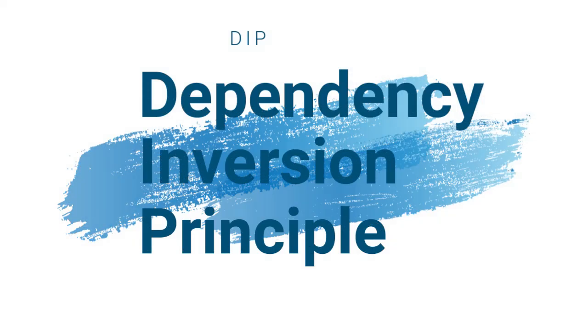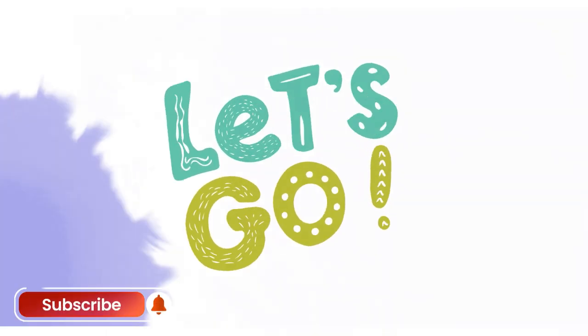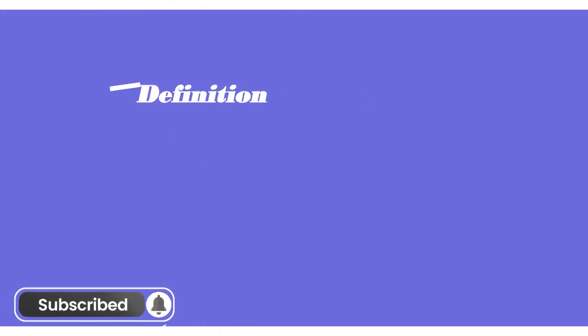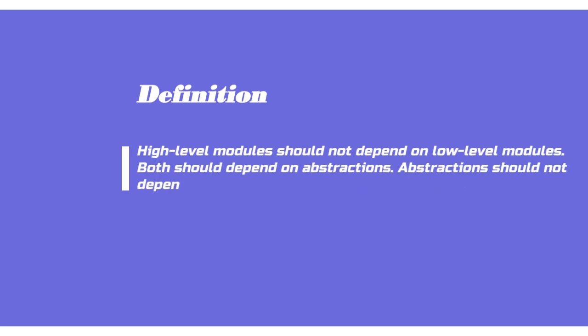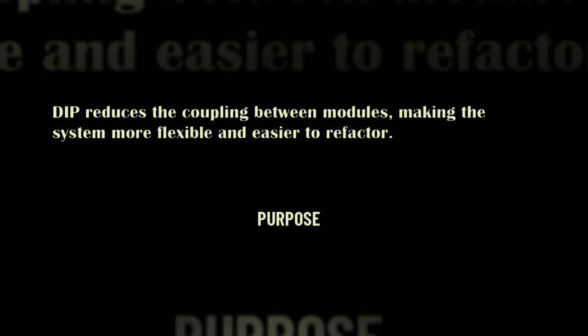DIP, Dependency Inversion Principle. High-level modules should not depend on low-level modules. Both should depend on abstractions. Abstractions should not depend on details. Details should depend on abstractions. DIP reduces the coupling between modules, making the system more flexible and easier to refactor.